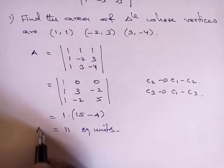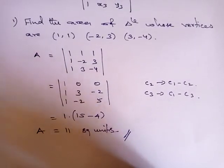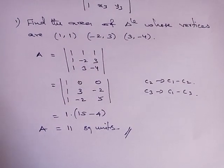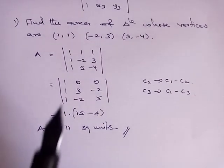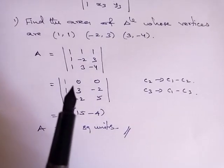The area of the triangle formed by these three vertices is 11 square units. We can find the area by using this determinant and by using the property.